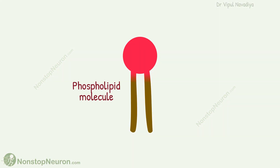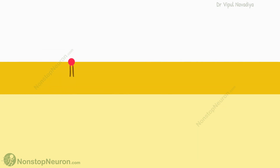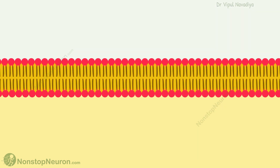This is a phospholipid molecule. It has a phosphate head, which is hydrophilic, meaning it likes to be with water. And a lipid tail, which is hydrophobic — meaning it likes to stay away from water. So the phospholipid molecules arrange themselves in a bilayer form, where phosphate groups are on the surface in contact with water, and lipid groups are on the inside, away from water. This is called hydrophobic interaction.